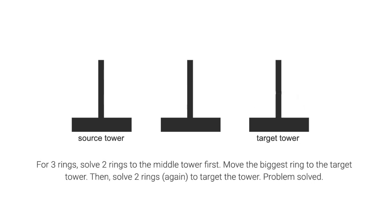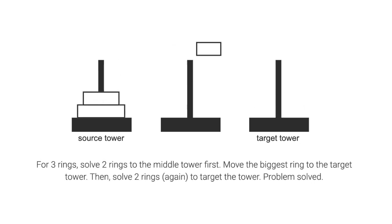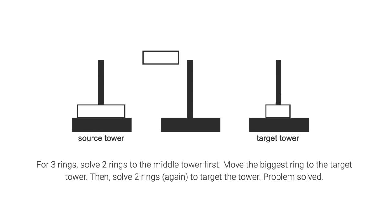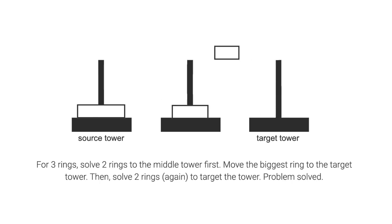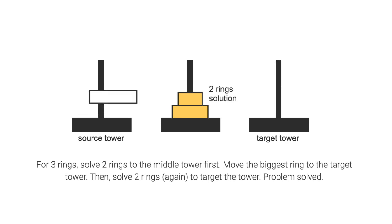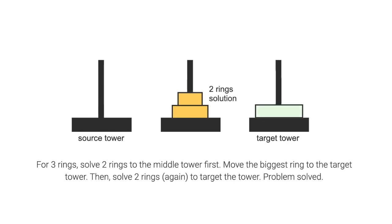For three rings, solve two rings to the middle tower first. Move the biggest ring to the target tower. Then, solve two rings again to the target tower. Problem solved.